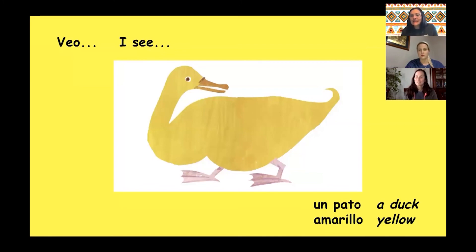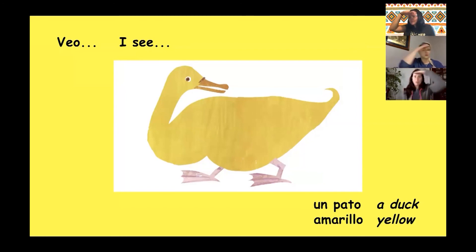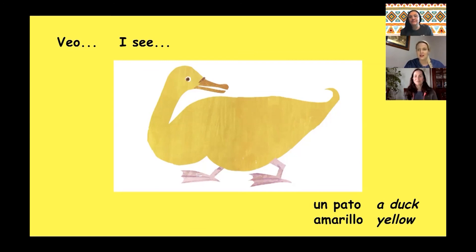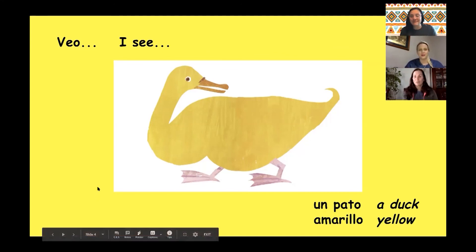This next animal — what animal is this? This is a duck. Muy bien. So in Spanish, the word for duck is pato. Repite, pato. Pato. Muy bien. Veo un pato. Un pato. Muy bien. Now Estefania, de qué color es un pato? This duck is yellow. Very good. So yellow in Spanish is amarillo. Amarillo. Muy bien. And that double L makes a ya sound. So this is un pato amarillo. Veo un pato amarillo. Perfect. Muy bien. Excelente.